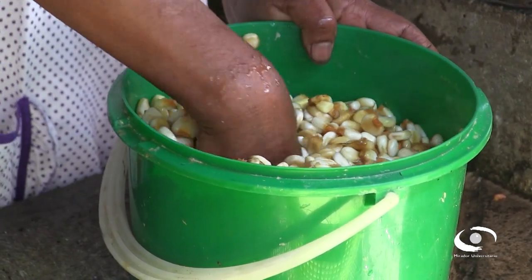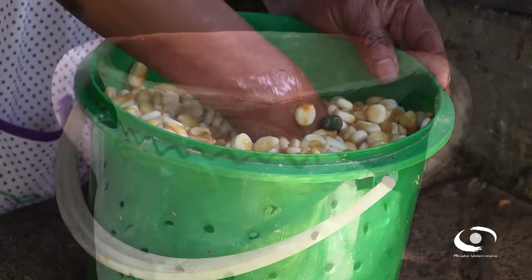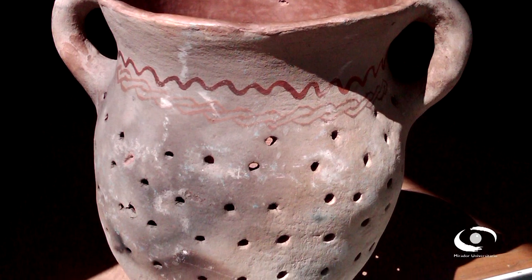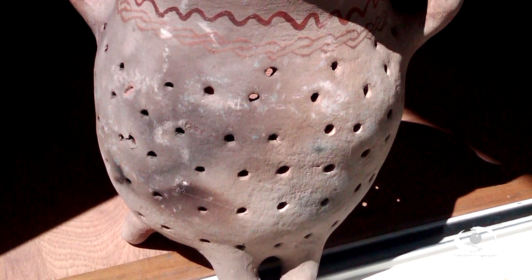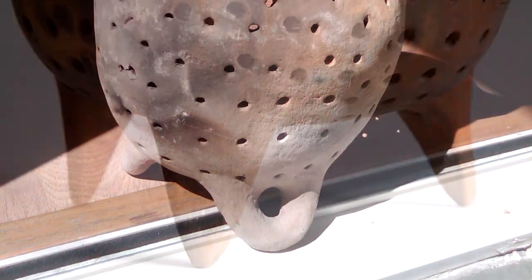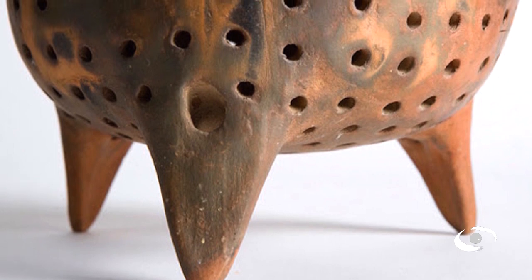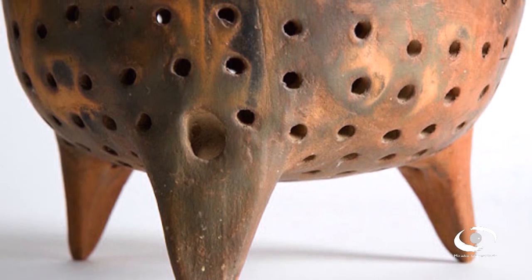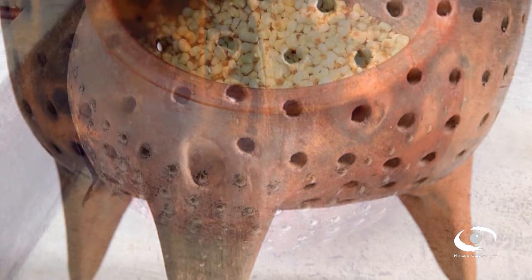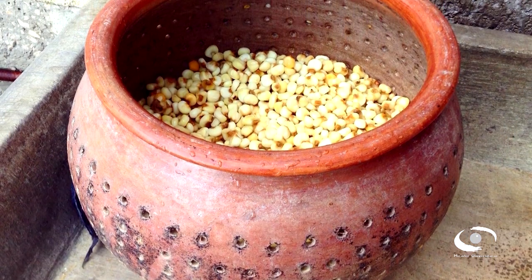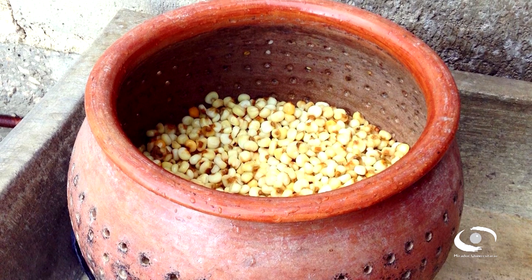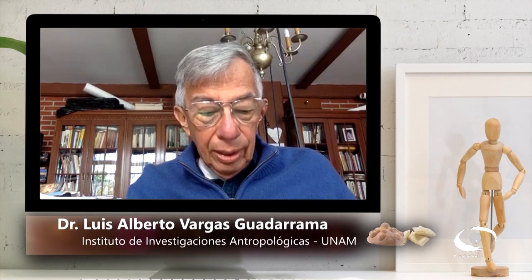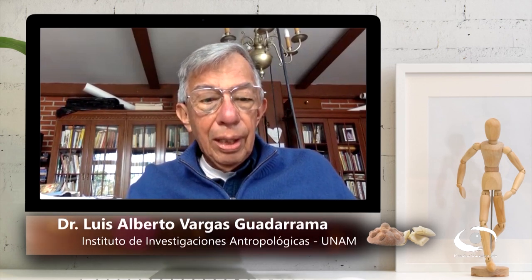Para enjuagarlo se usaba un instrumento: una vasija que causaría extrañeza porque está llena de hoyos — agujeros más bien grandes — que se conoce como pichancha. Uno pensaría que ahí no se puede guardar agua; no, es simplemente una coladera donde los agujeros son lo suficientemente grandes para que no se salga el maíz, pero permiten que el agua salga con facilidad y hacer el enjuague. Ya enjuagada esta mezcla, hay que molerla.